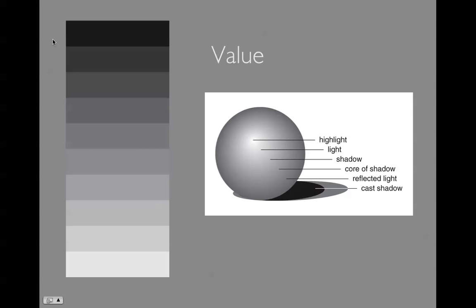We also have a number system assigned to this value range. We usually start with 1 as the lightest value and 10 as the darkest value. So sometimes you might hear someone describe the value in that number sense. They might say it uses a lot of 1s and 5s, or it really uses a lot of 7s to 9s to describe how they're seeing the value in a work.